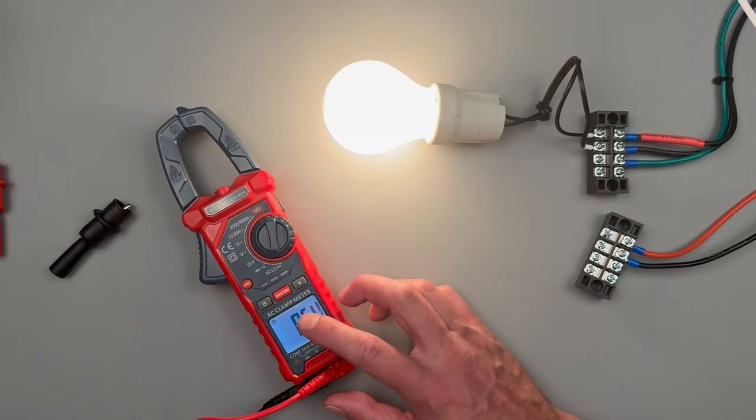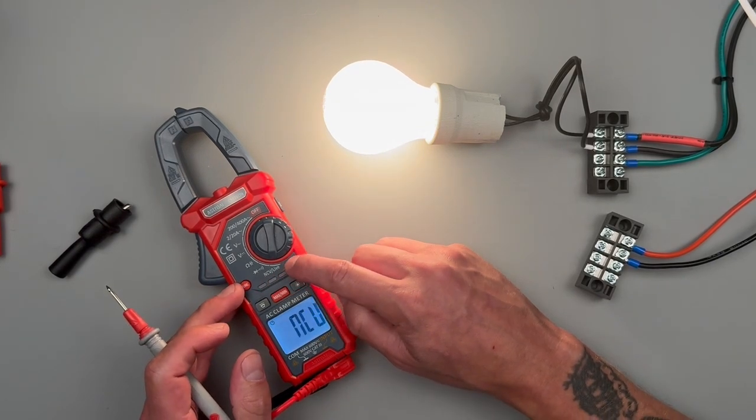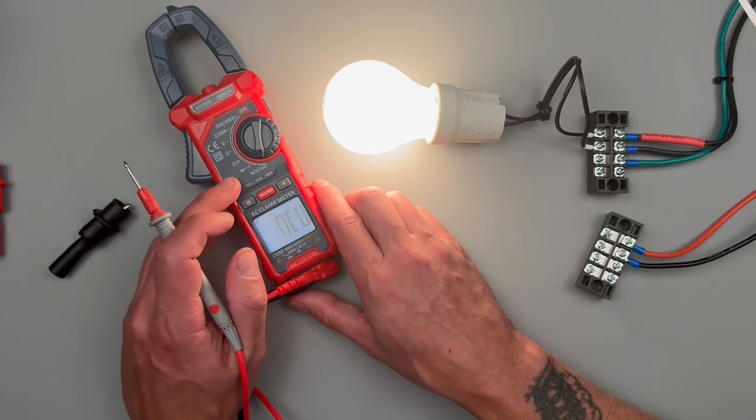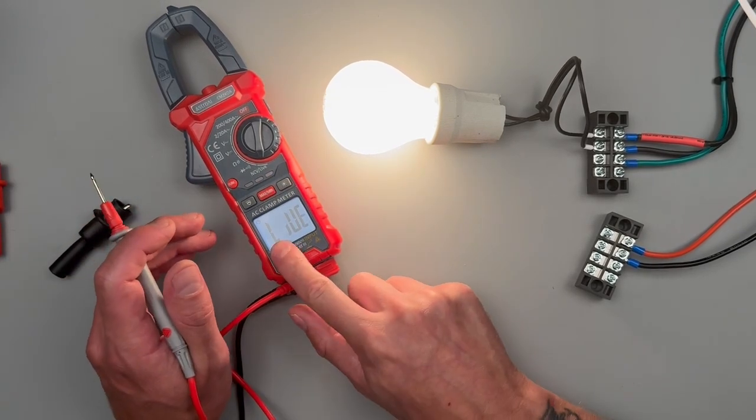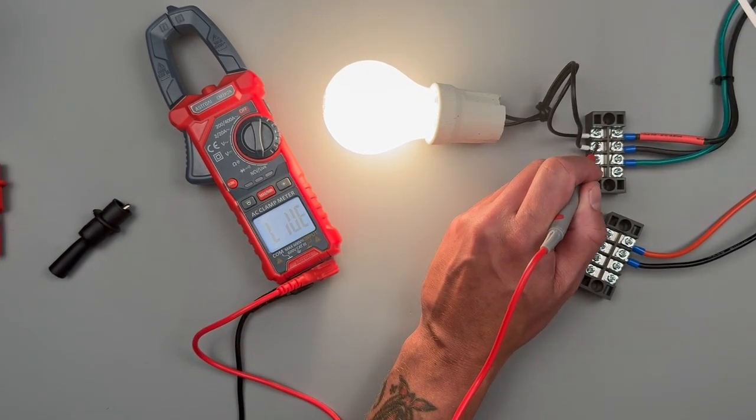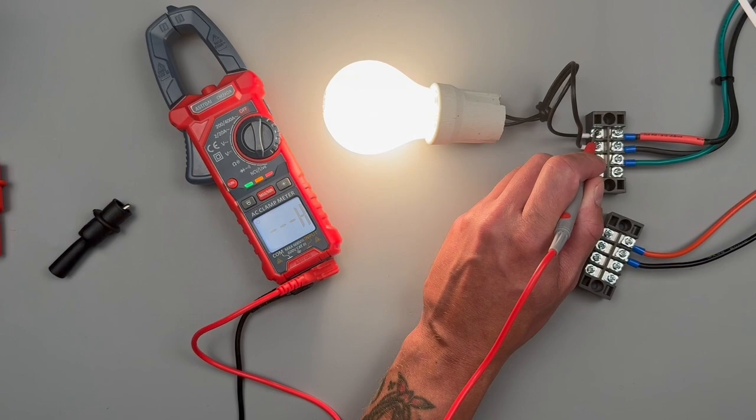Now it has another function that I think is pretty interesting. If you're on the NCV slash live, it'll default to that non-contact voltage, but if we hit the function button, you'll see live pop up on here. And then you can use your red probe to find your hot. That's saying it's hot.